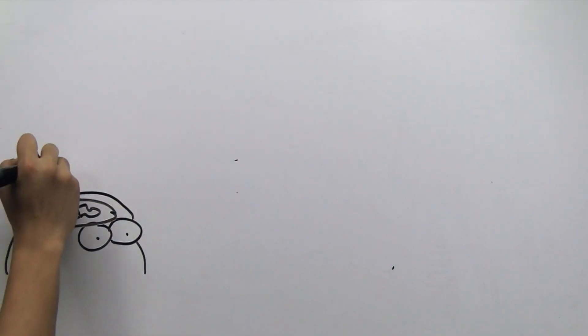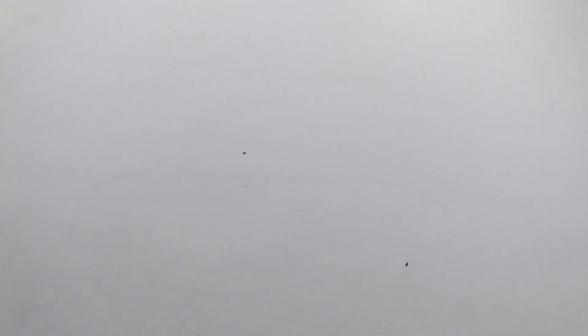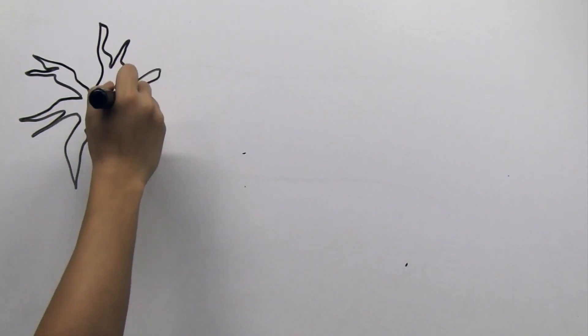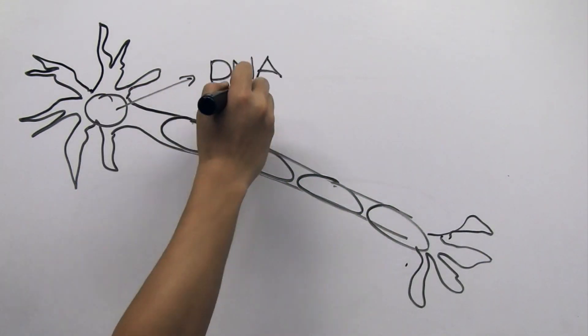Whether in humans or flies, the formation of memories are very similar when we get right down to it. This is how a neuron in the brain looks. In each neuron, there's the DNA headquarters. We'll talk more about this later.